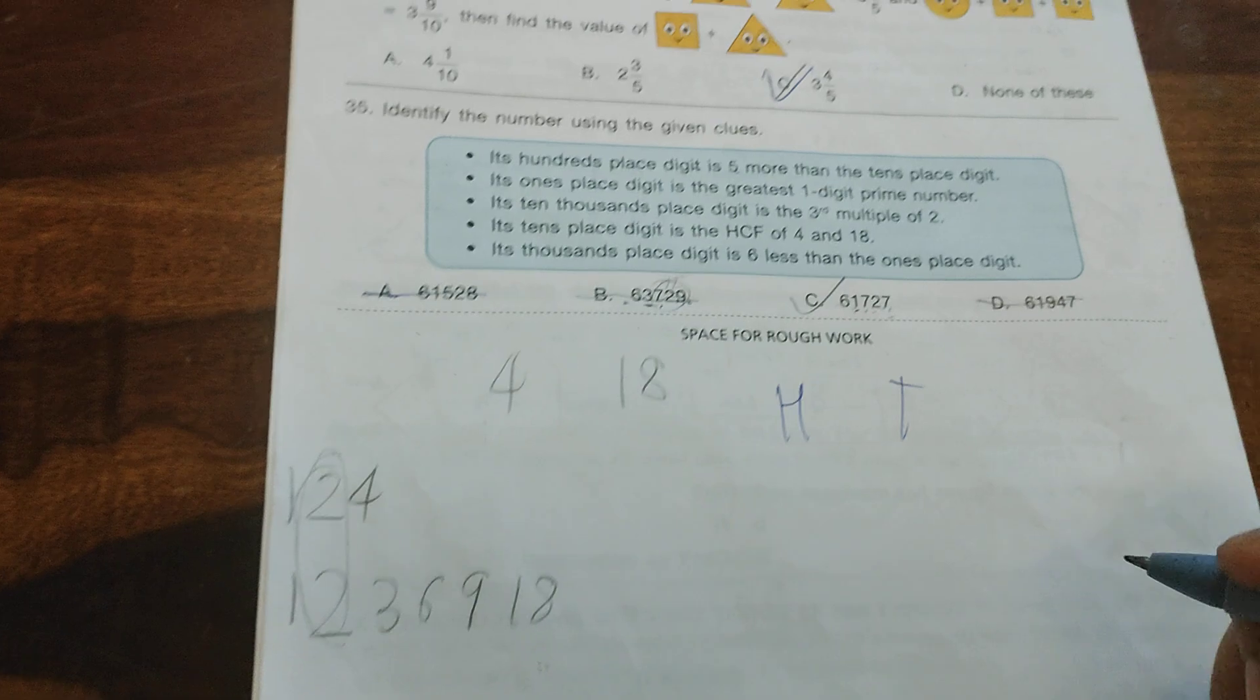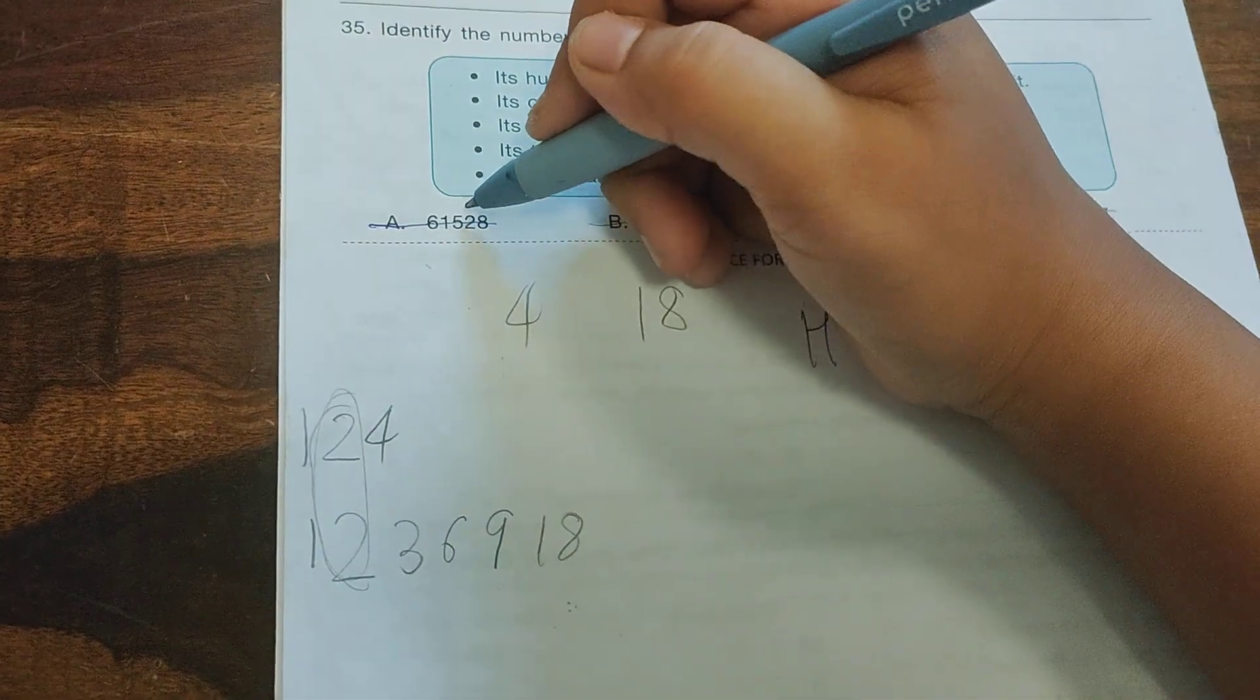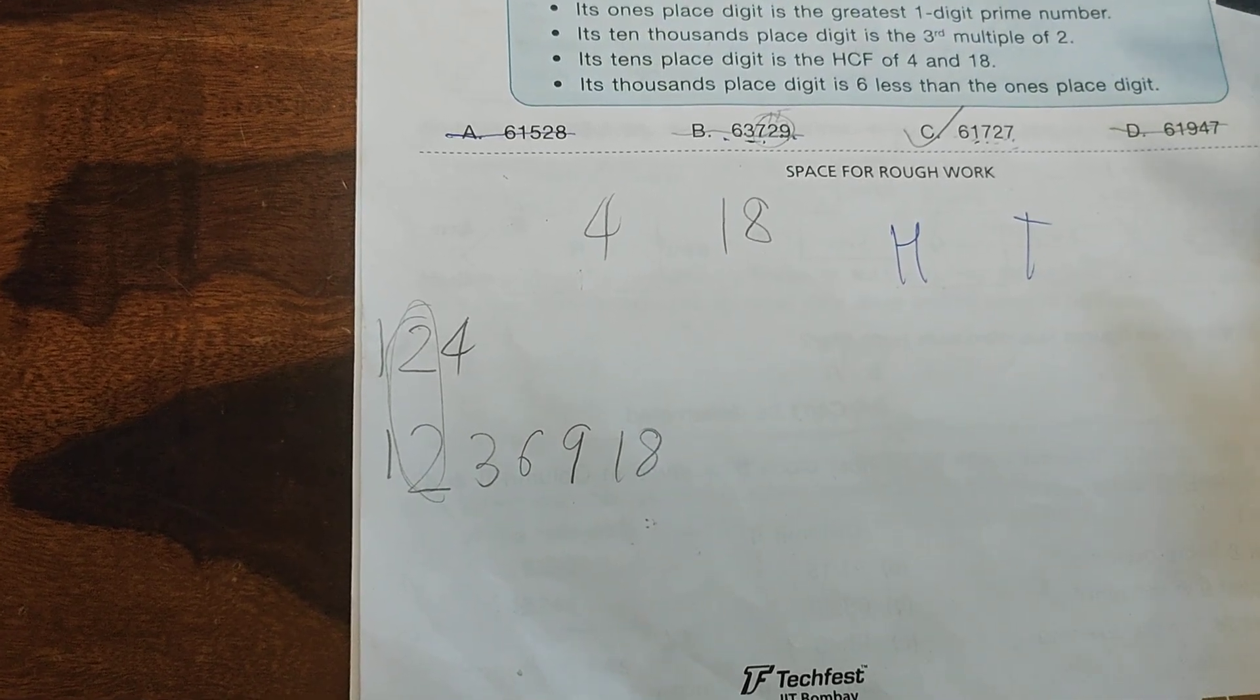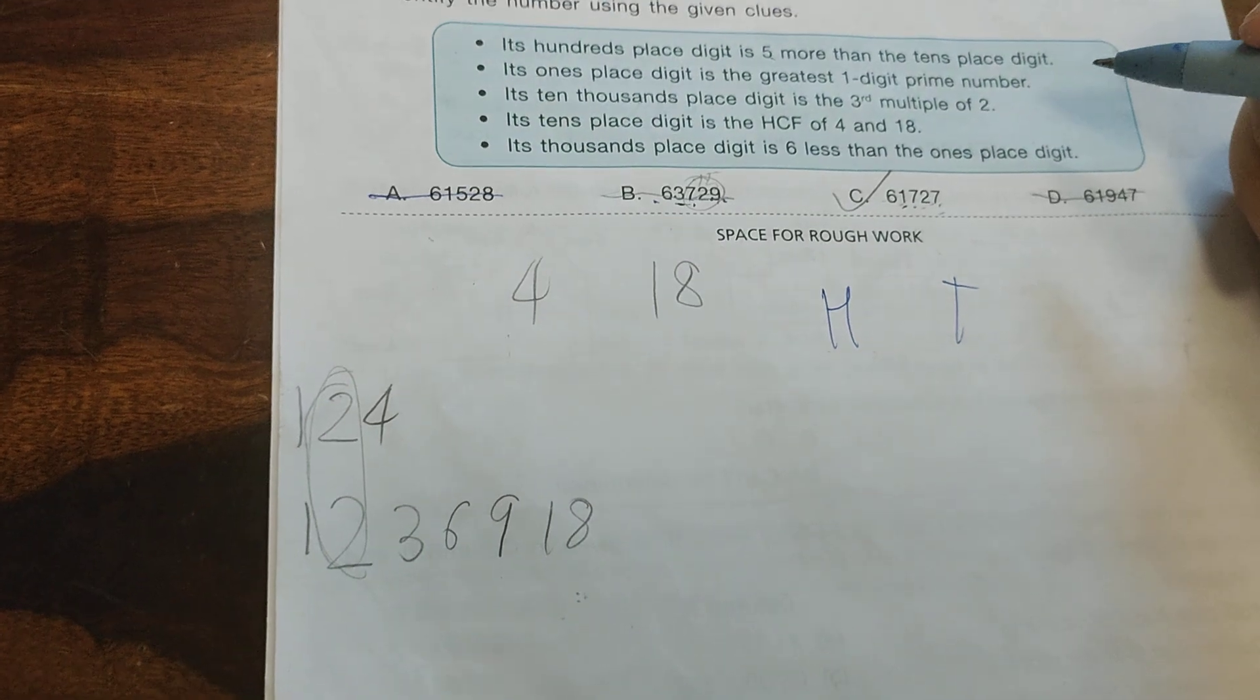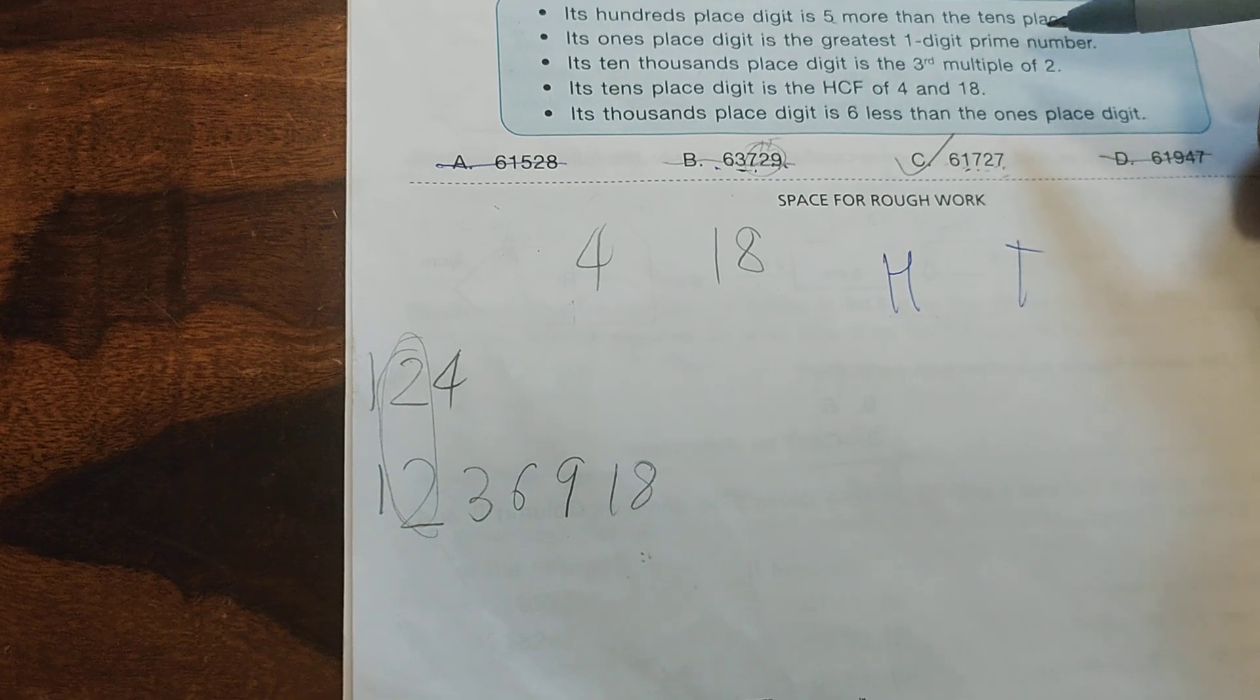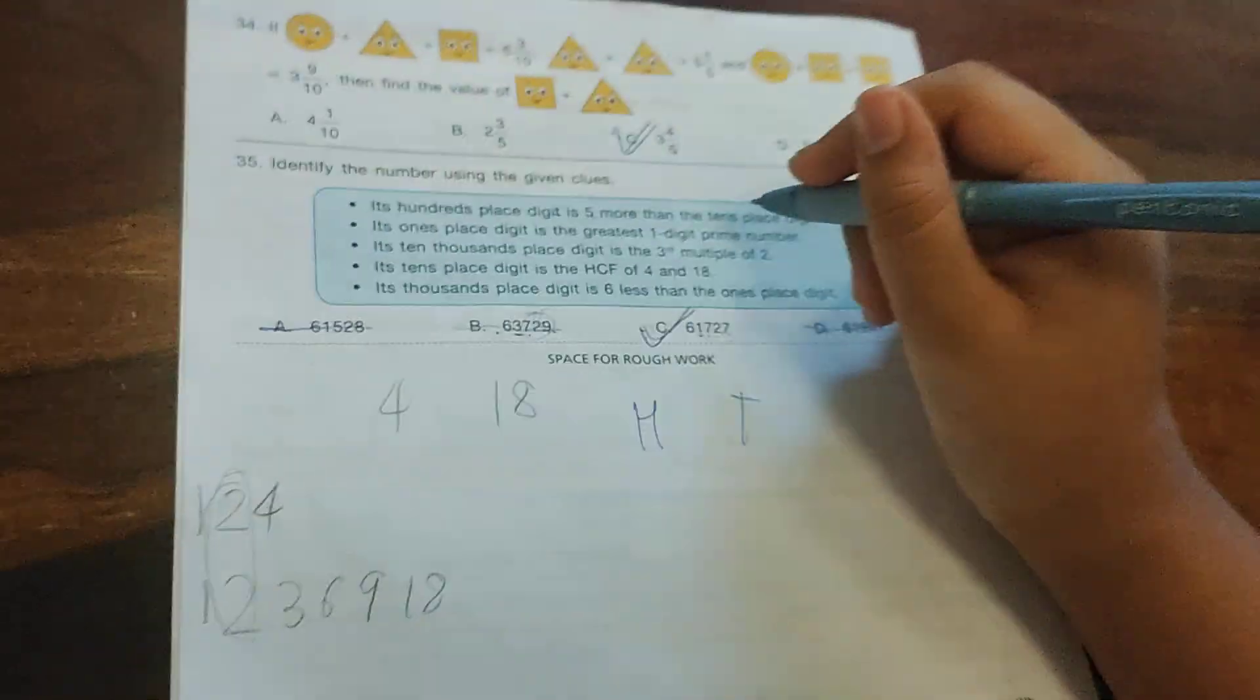Question 35: Identify the number using the given clues. This is the last question of the paper. The hundreds place digit is 5 more than the tens place digit - eliminating some options. The ones place digit is the greatest 1-digit prime number, which is 7, not 9 which is composite. This eliminates option B. The ten-thousands place digit is a multiple of 3. The tens place digit is the HCF of 4 and 18, which is 2, not 4. Therefore, the answer is option C: 61,727.